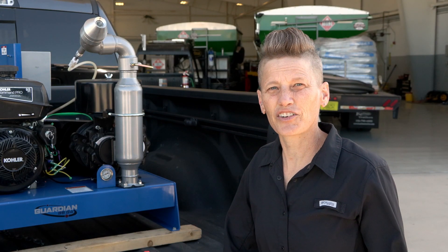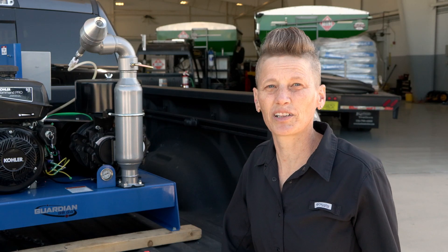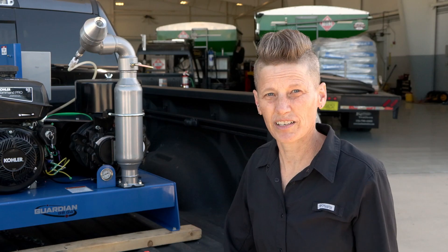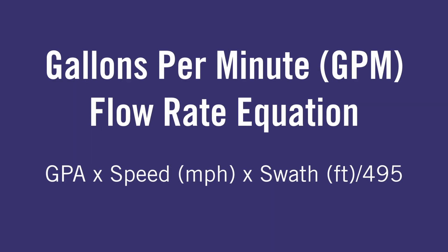Using your vehicle speed and your standard operational swath — which is typically 300 feet for ground equipment — you can calculate your required flow rate. Use the standard equation for gallons per minute: gallons per acre times your speed times your swath, all divided by 495.